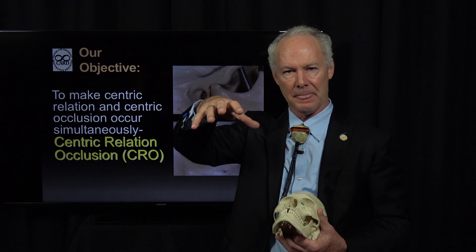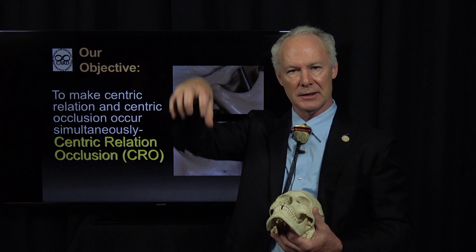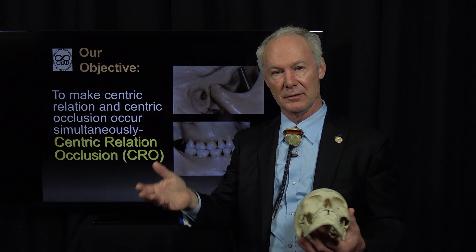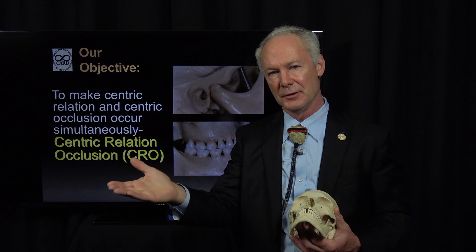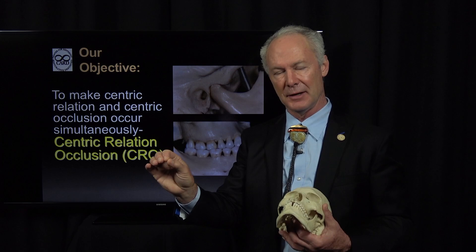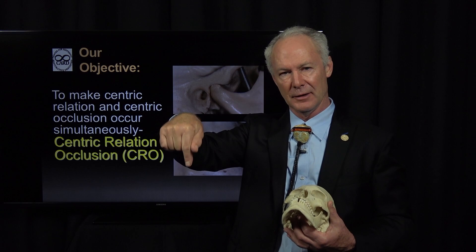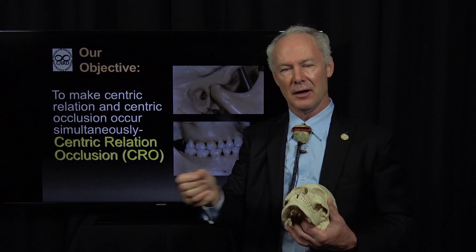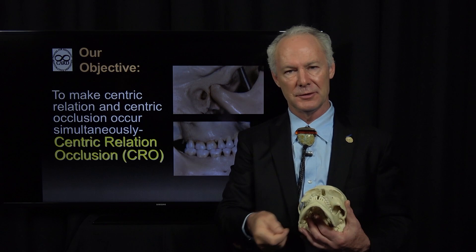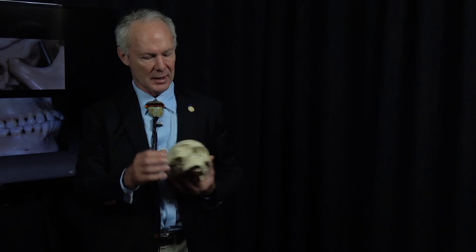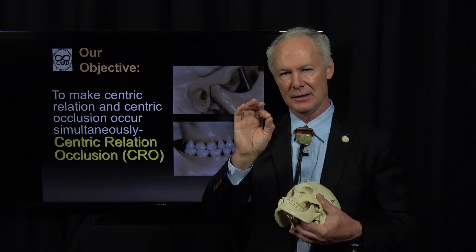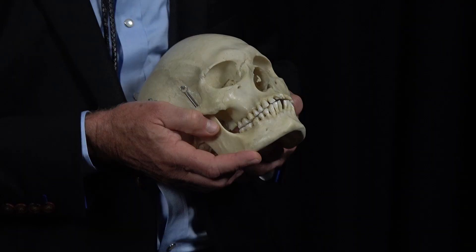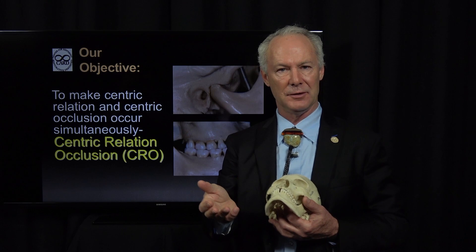Picture a table in a restaurant that has 10 legs. For that table to be stable, probably four of those legs need to contact at precisely the same time. If the four corner legs contact simultaneously, and the other legs don't contact at all or contact at the same time, that's a stable table. But if one leg in the middle contacts first, that table is going to pivot. You either shave a little off that leg or put sugar packets under the others. That's why they call it the occlusal table.